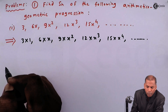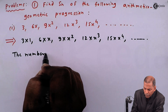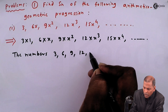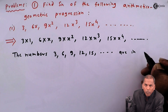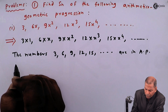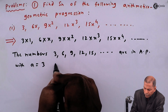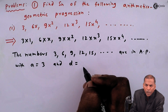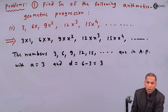The numbers 3, 6, 9, 12, 15, ... are in AP with first term a equal to 3 and common difference d equal to 6 minus 3, which equals 3.